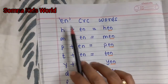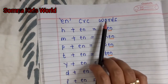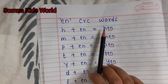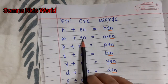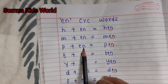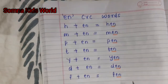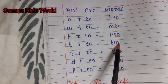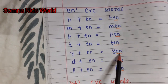Next is the 'en' CVC words: h-en — hen, m-en — men, p-en — pen, t-en — ten, y-en — yen, d-en — den, f-en — fen.